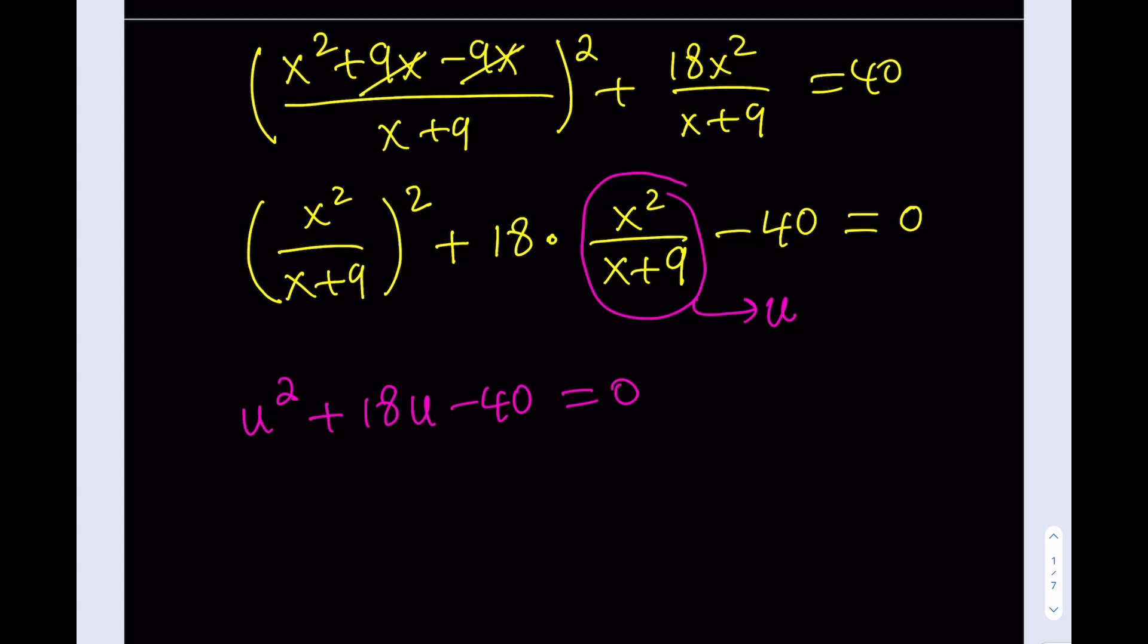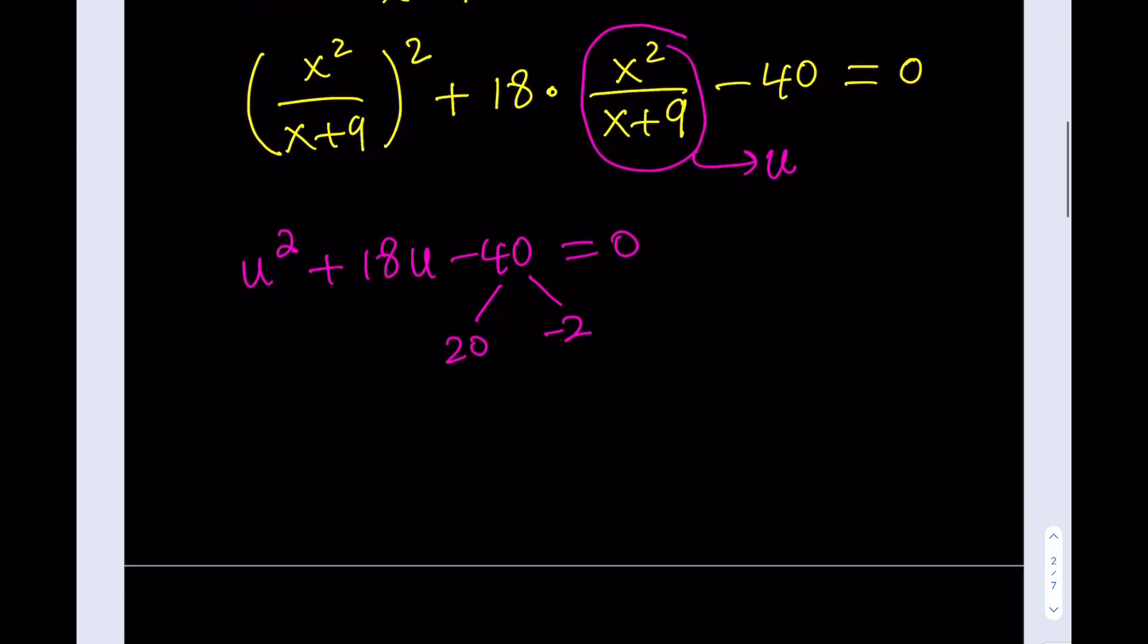I'm going to call this guy here, which is x squared over x plus 9, let's call that u. So let's go ahead and substitute that. It's going to give me u squared plus 18u minus 40. And I think this is factorable. I was thinking about 8 and 5, but that doesn't work. 10 and 4, maybe something greater than that. How about 20 and 2? But one of them has to be negative. That's it. Sum and product satisfied. This gives me u plus 20 multiplied by u minus 2 equals 0. As a result, I get u equals negative 20 and u equals 2.